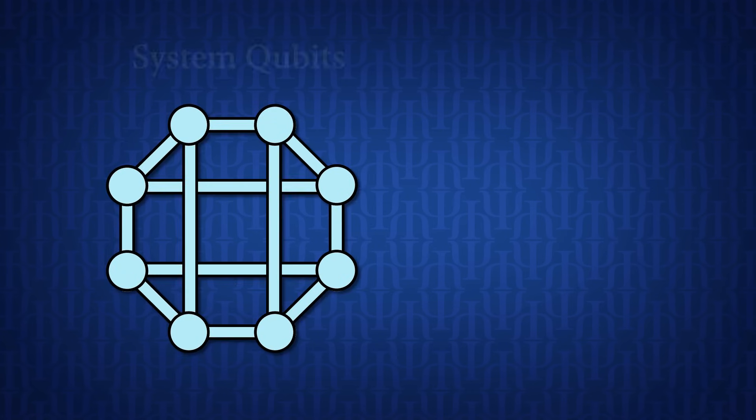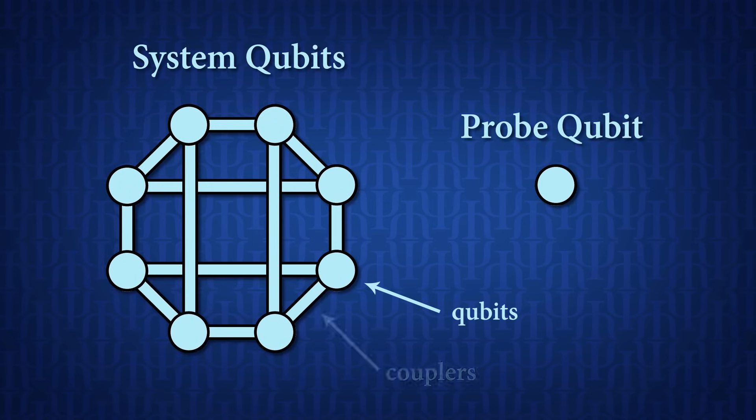So let me explain what this is. In tunneling spectroscopy, you split the qubits into two groups, the system qubits and the probe qubits. And you have a link between them. In our experiments, we used a single qubit as a probe.